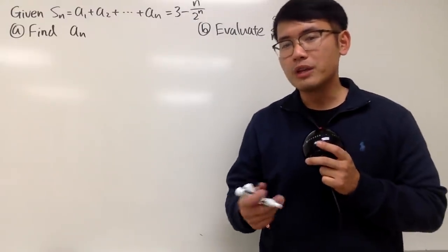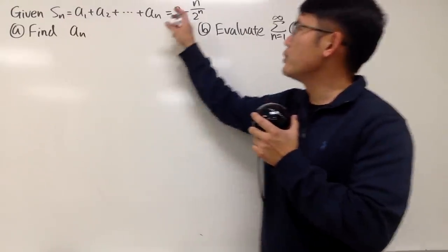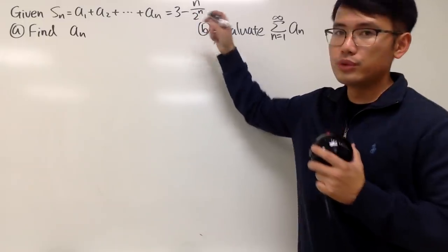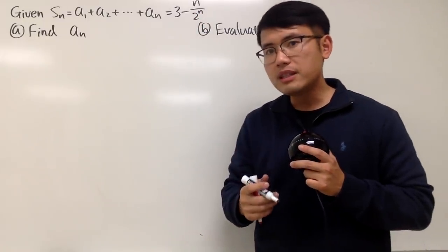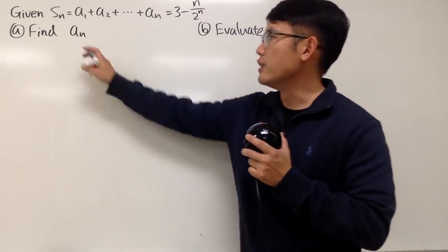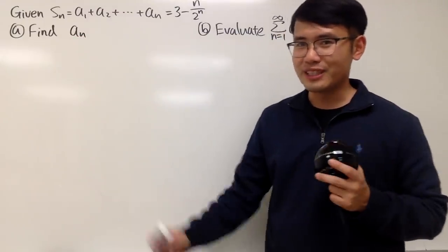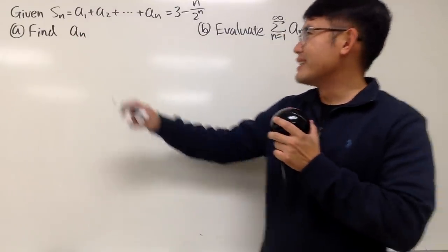Okay, in this video we are given the formula for $S_n$, namely $S_n$ is equal to $3 - n/2^n$. And now, based on this, is it possible to find out the formula for $a_n$? Of course. Otherwise, how can I make this video, right? Anyway, take a look.